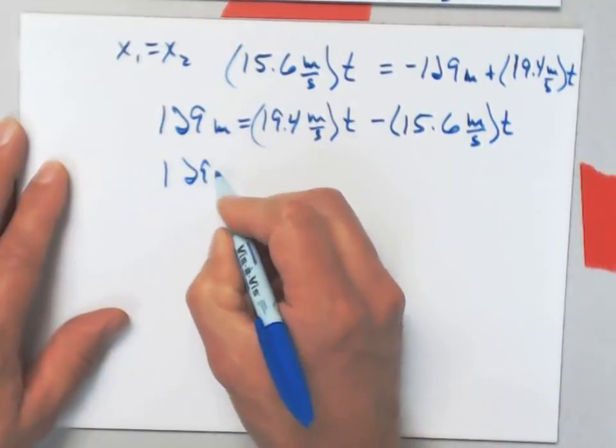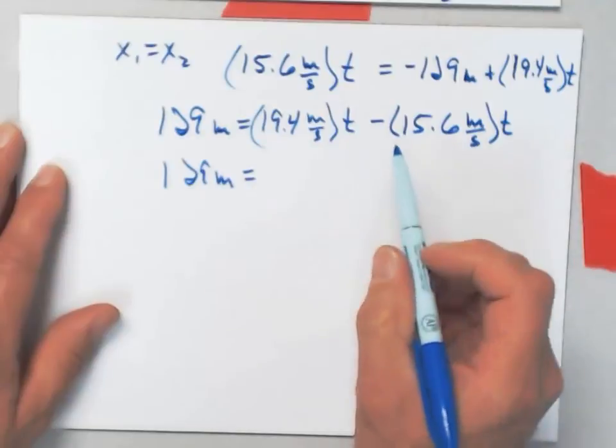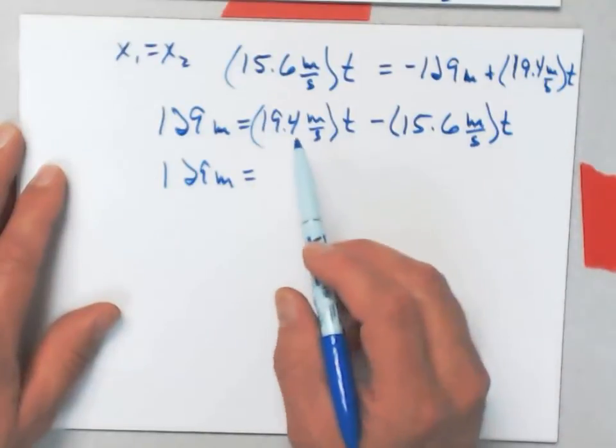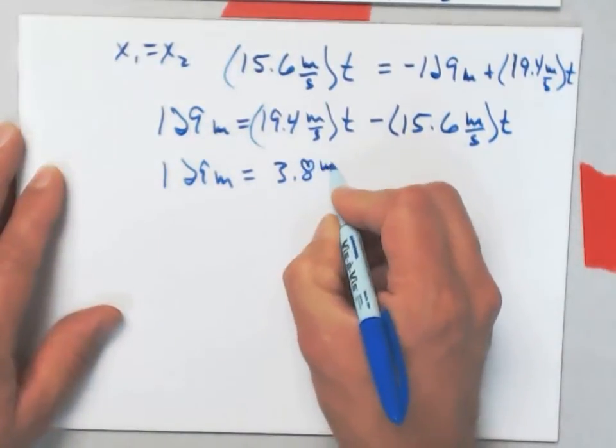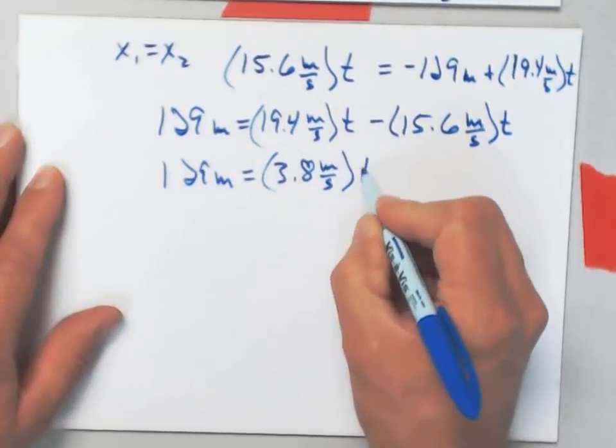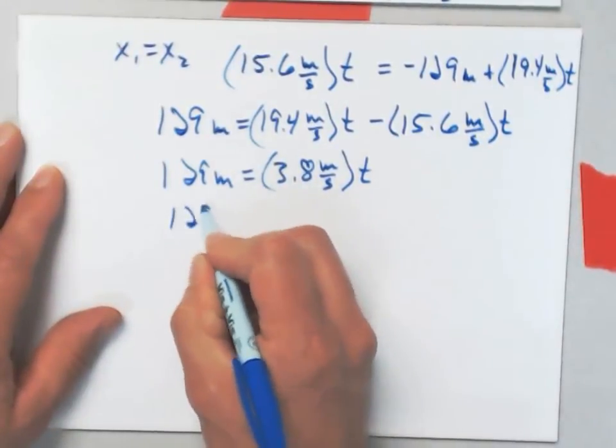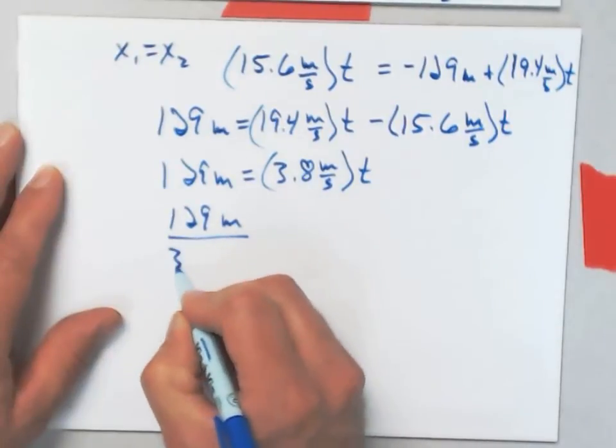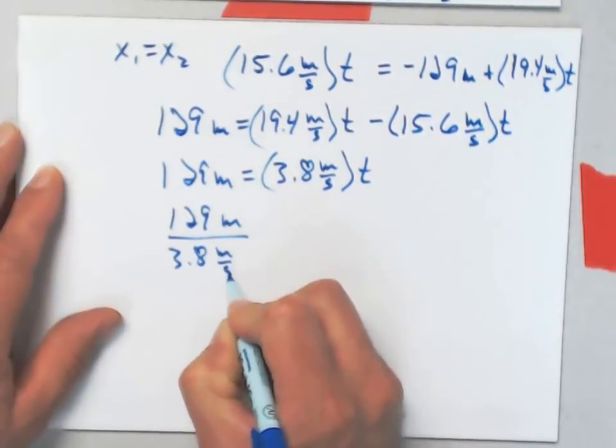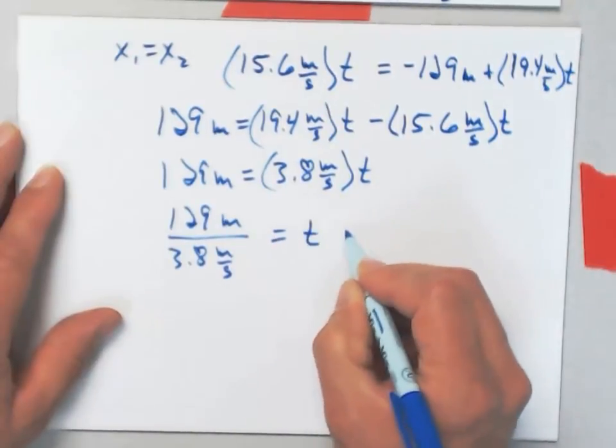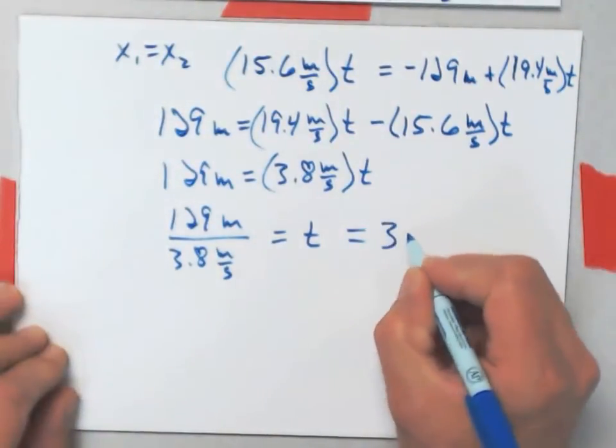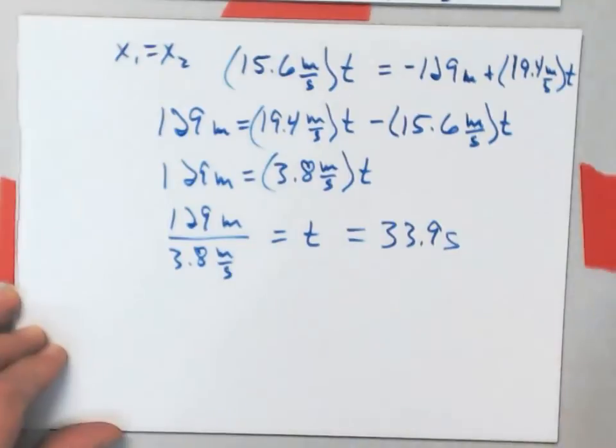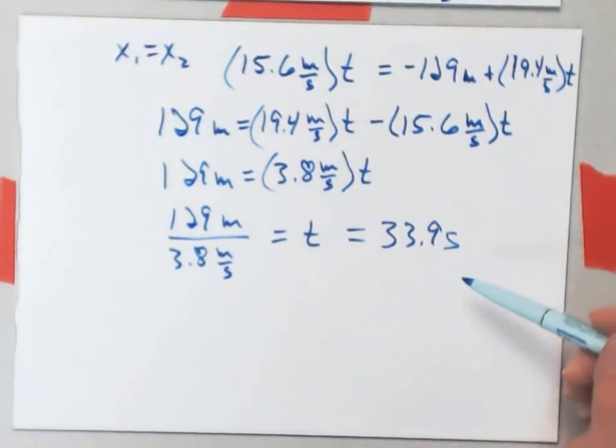Or, 129 meters divided by 3.8 meters per second times t. Or, 129 meters divided by 3.8 meters per second is equal to t. And that will give me 33.9 seconds. That's how long it takes for the second car to pass the first.